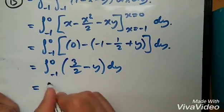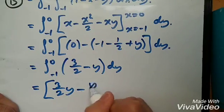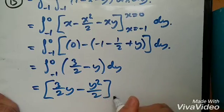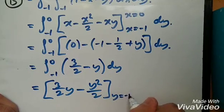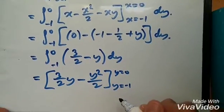And lastly, integrating this, we're going to get 3 over 2y minus y² over 2, from limits y equals -1 to 0.